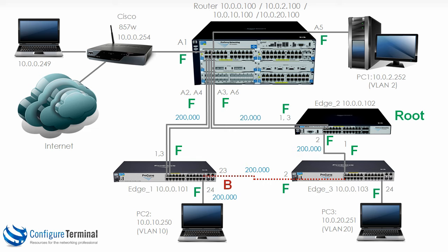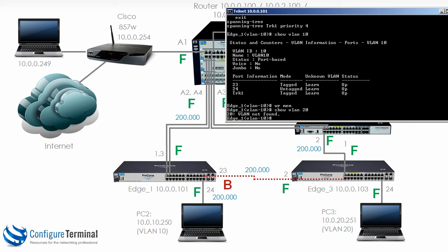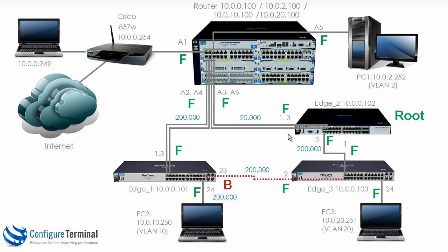But what about PC3? If this link went down, would we be able to send traffic via this link to get to PC3? The answer would be no. On edge 1, typing show VLAN 20 shows me that VLAN 20 doesn't exist — no ports are in VLAN 20. So if this link or trunk went down, there would be no connectivity to PC3 from other parts of the network, even if spanning tree had unblocked this port.